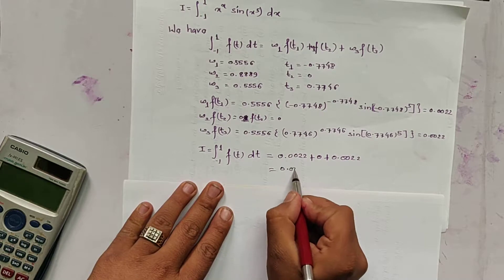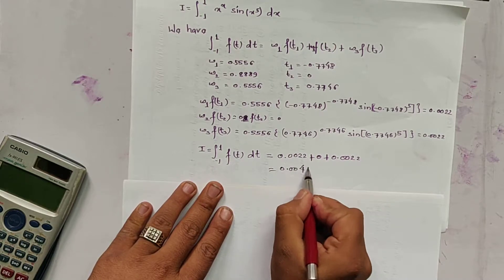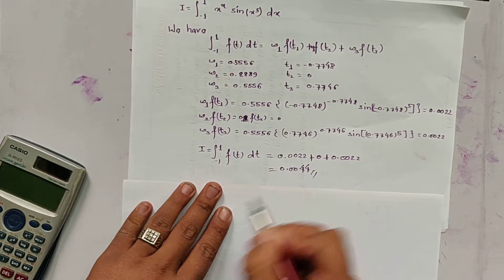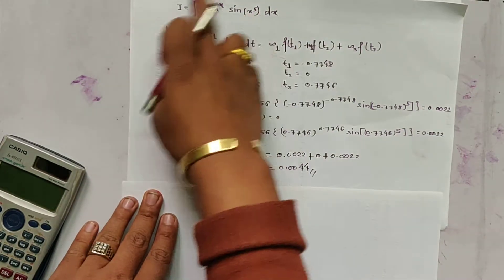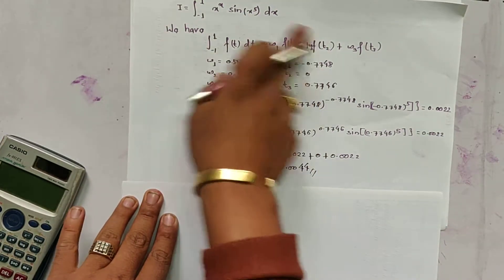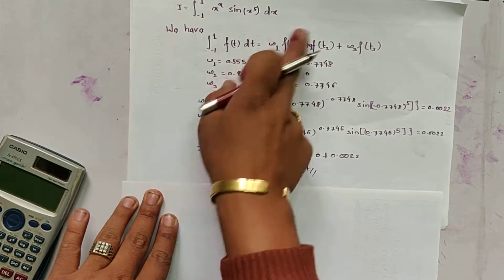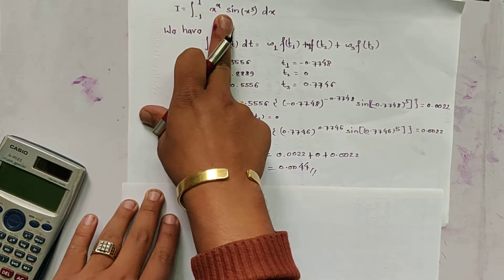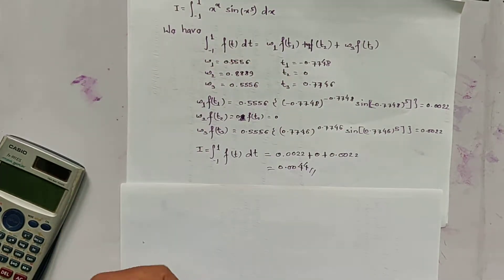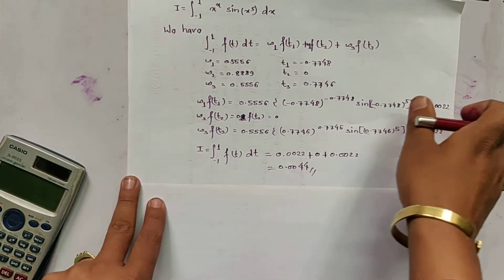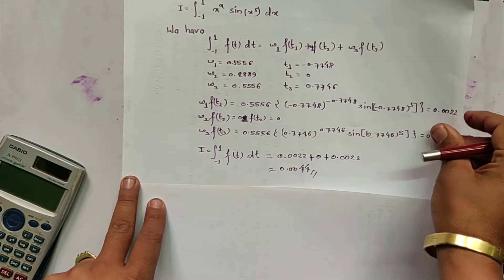Therefore, the integral from minus 1 to 1 of f(t) dt = w1*f(t1) + w2*f(t2) + w3*f(t3) = 0.0022 + 0 + 0.0022 = 0.0044. This is the value of the integration using the Gaussian 3-point form.